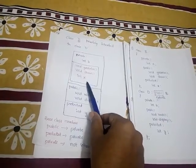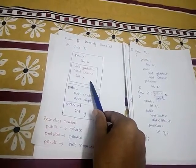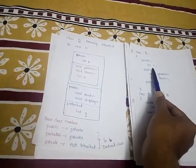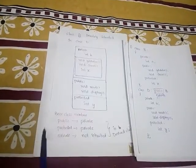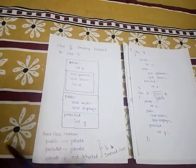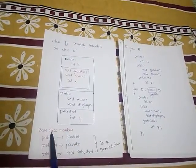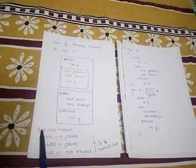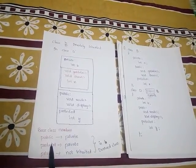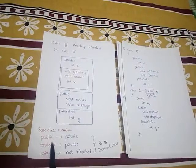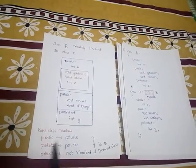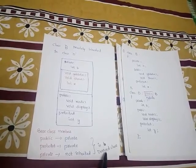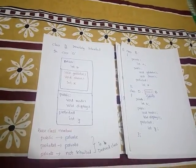The private data member int a from the base class is still not inherited. To summarize private inheritance: public members of the base class become private in the derived class, protected members also become private, and private members are not inherited. These are all present in your derived class. Thank you.